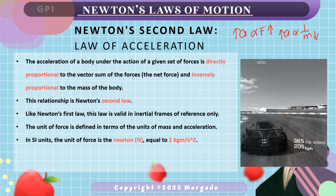The law of acceleration is written in terms of a mathematical equation as: the summation of forces — net force — is equal to the product of mass and acceleration. From this equation, you can see that if we derive acceleration, acceleration would be equal to the summation of forces acting on the body divided by the mass. This is the relationship we stated earlier.